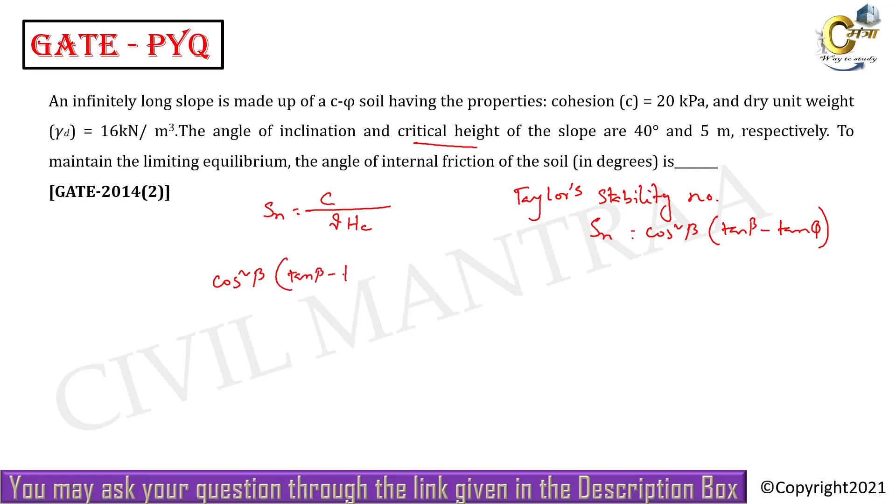...into (tanβ - tanφ) equals c/(gamma × Hc), this is also right. From here we can write the value of tanβ: tan40° - tanφ equals c. The value of c given is 20 kPa, so: 20/(16 × 5 × cos²40°).